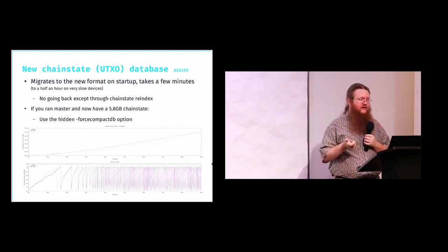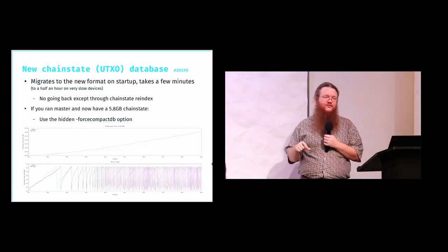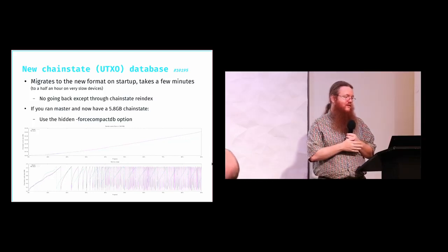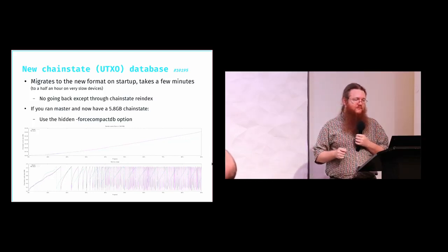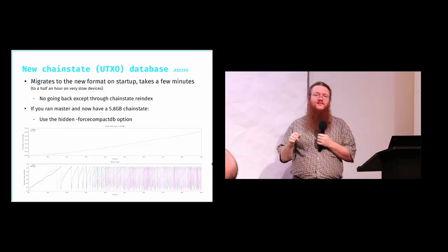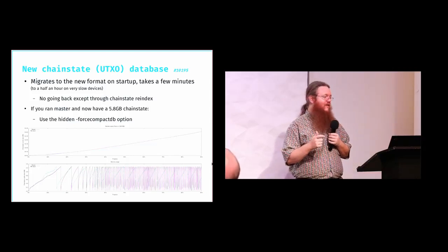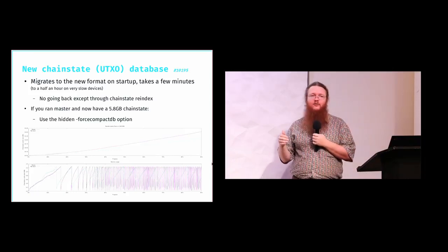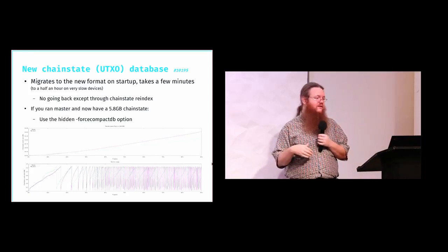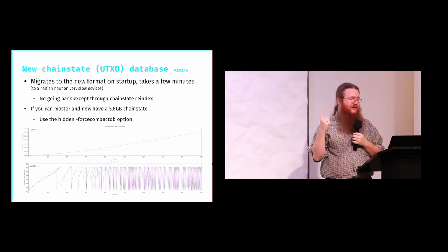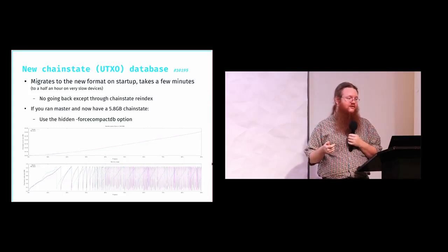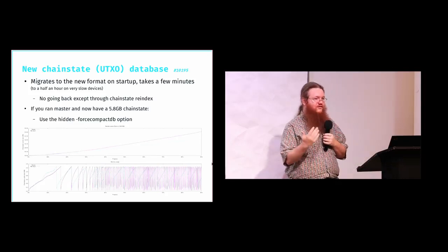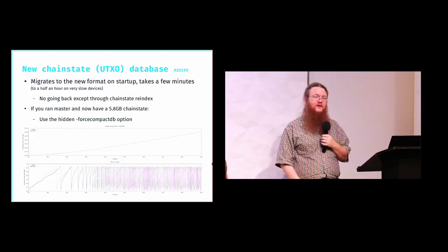There is a corner case where if you ran Bitcoin Core master during a couple-week period from when we introduced this until we improved it a bit, your chain state directory may have become 5.8 gigabytes — double the size — because LevelDB, the underlying backend database, wasn't particularly aggressive about removing old records once they were deleted. There is a hidden force-compactdb option that you can run as a one-time operation to shrink the database back to its normal size.